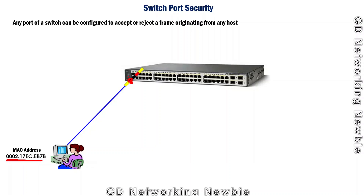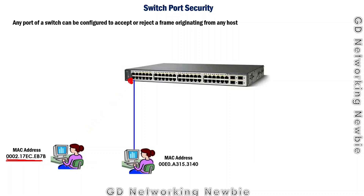If some other user connects to the same port and sends a frame, that frame will have a different source MAC address. When this frame reaches the port, the port will reject and discard it, because as per the configuration the port is only allowed to accept frames from the configured MAC address on the left-hand side.